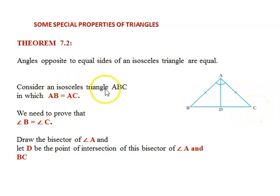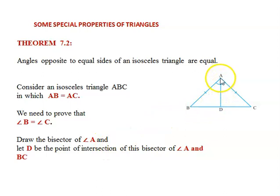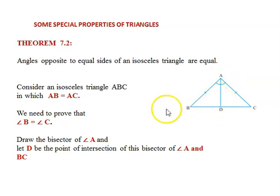Now, what do we need to prove? The angles opposite to the equal sides are angle C and angle B. So we need to prove that angle B is equal to angle C. To prove that, we need to do some construction. We are going to draw an angle bisector from point A. The angle bisector divides the angle into two equal parts. So AD is the angle bisector.